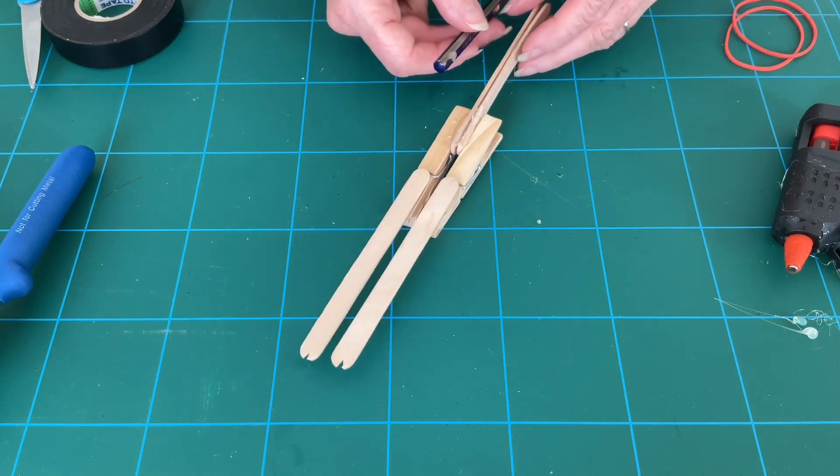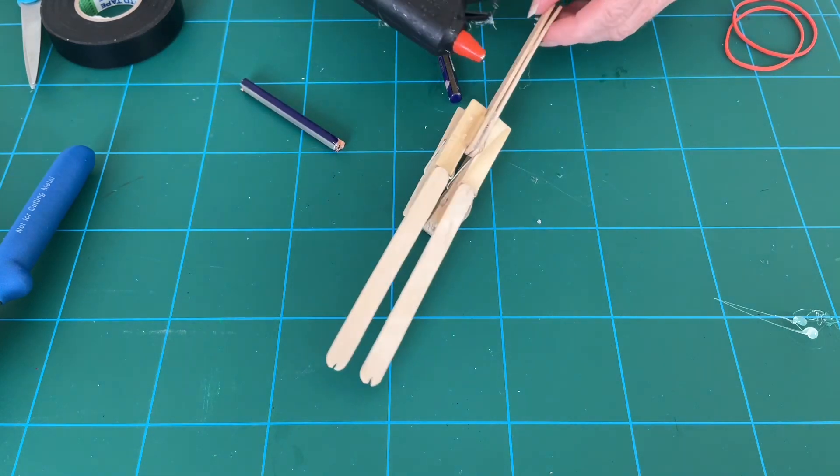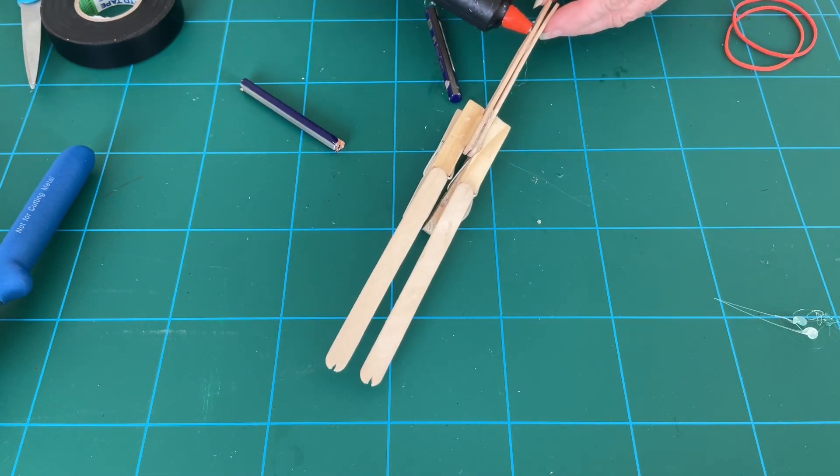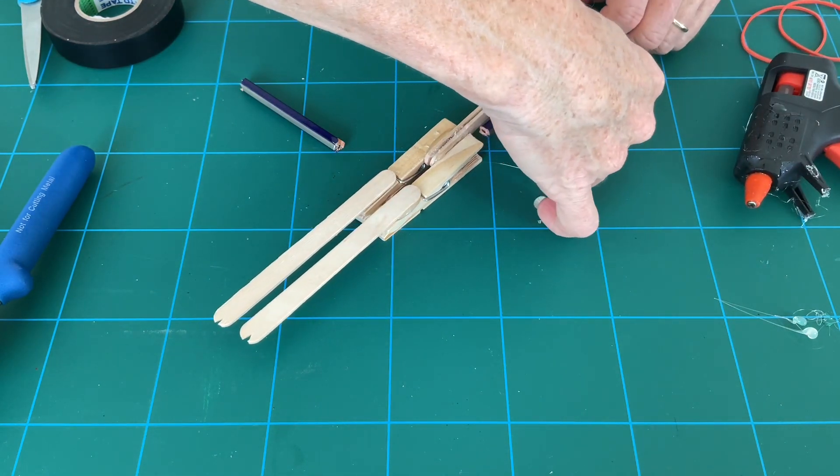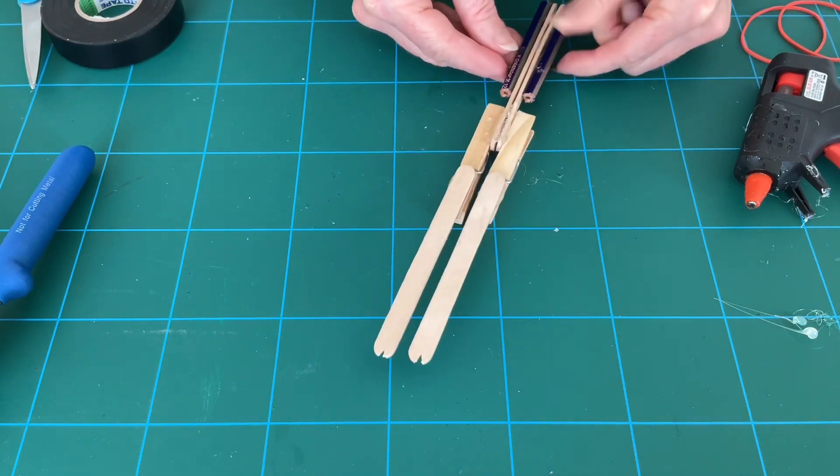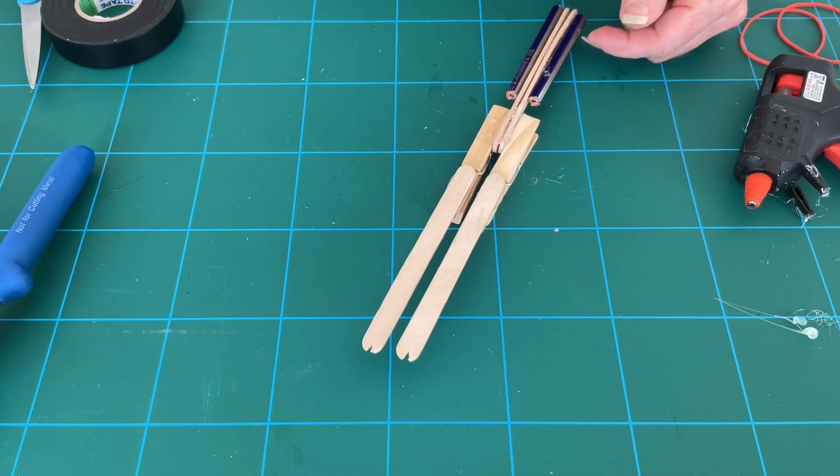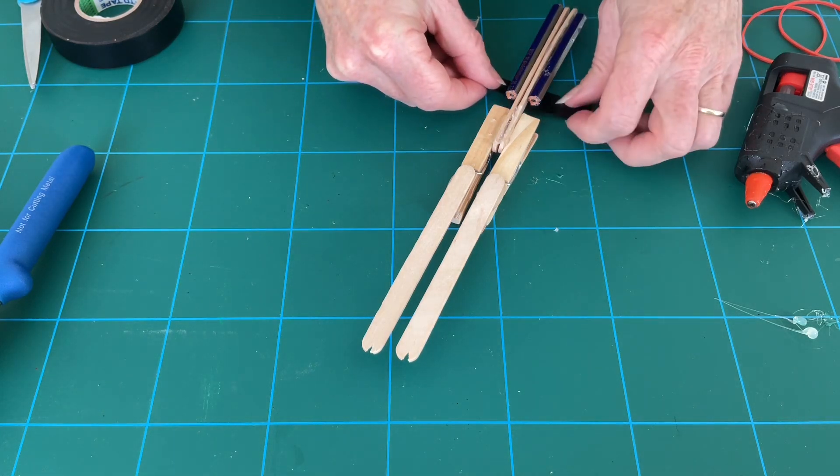When your lolly sticks are dry, glue these to the side. You can also use some tape around them to make it look more like a handle.